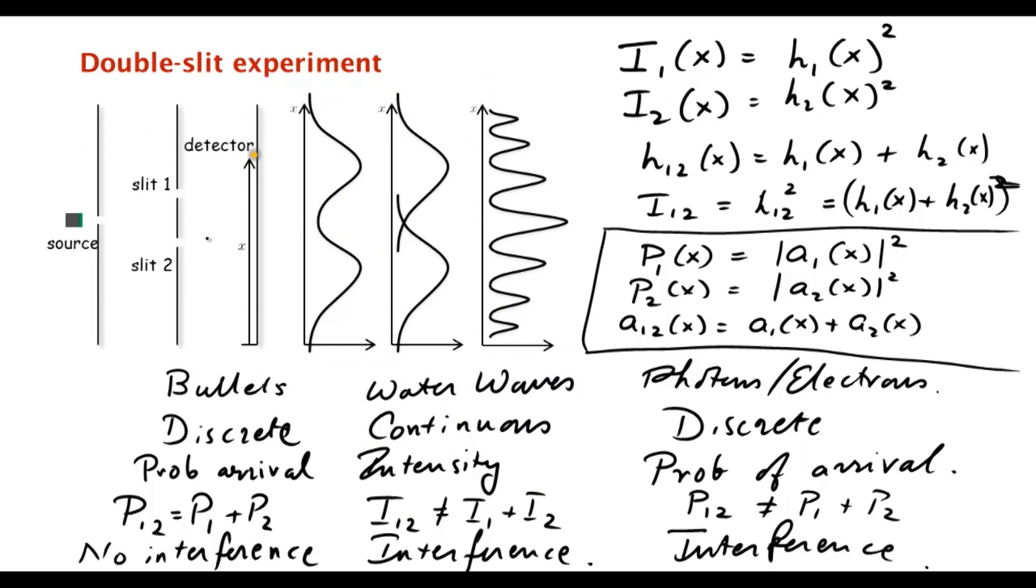The mathematics is very simple, it's very much like water waves. But how do we make sense of this probability amplitude—electron went through slit 1 and ended up at the detector—the fact that it's some complex number, it can be positive, negative, it can be imaginary? How do you make sense of this? What does it all mean?